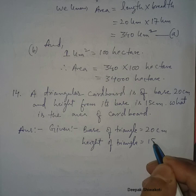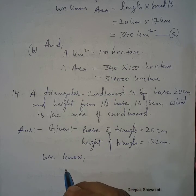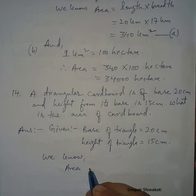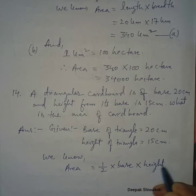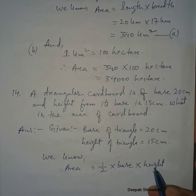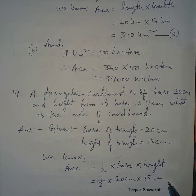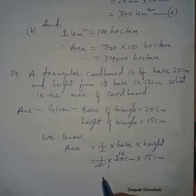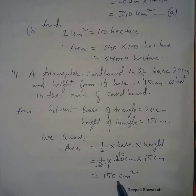We know the formula: area of a triangle equals half into base into height. Height can also be called altitude — same thing. So: half into 20 centimeters into 15 centimeters. When you multiply, you get 150 centimeter square. So the area of this triangular cardboard is 150 centimeter square.